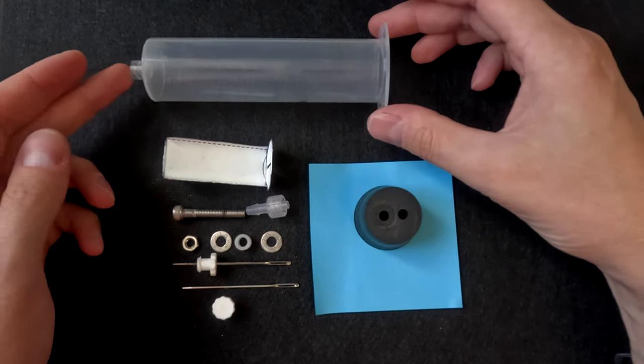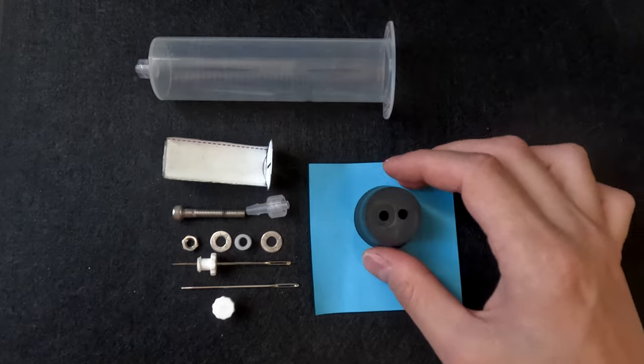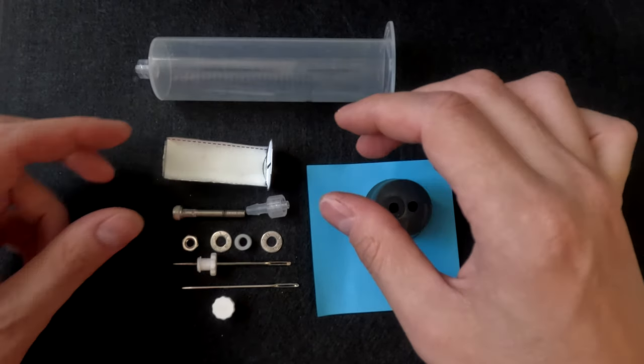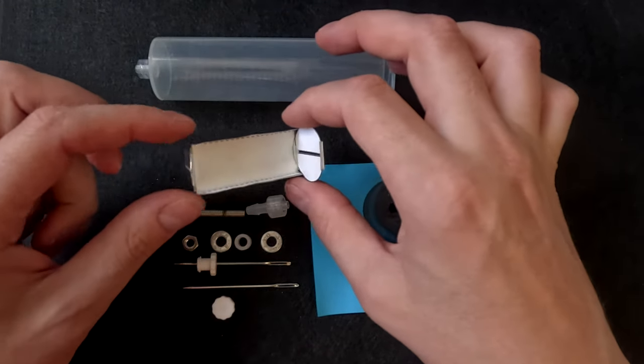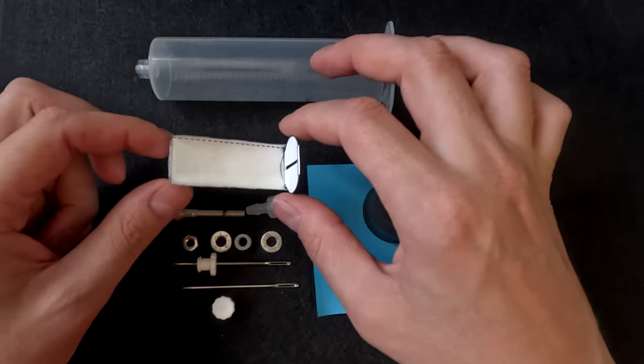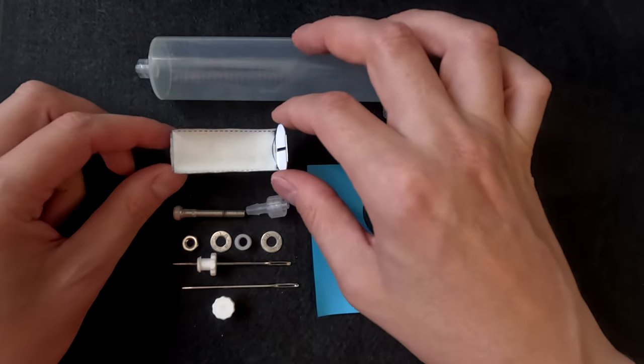To assemble your Crooks tube, you will need one syringe body, one dual hold rubber stopper, one pre-assembled Crooks tube fluorescent screen, the assembly of which will be discussed in a later step,